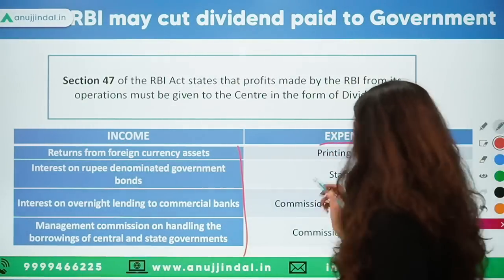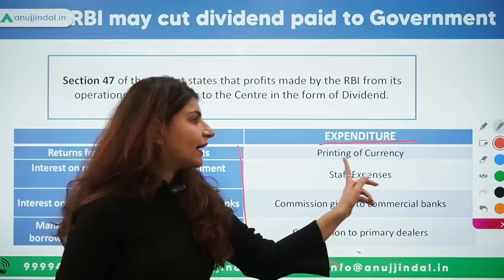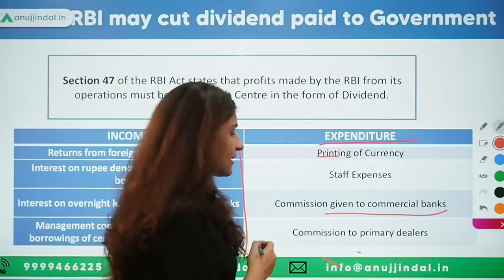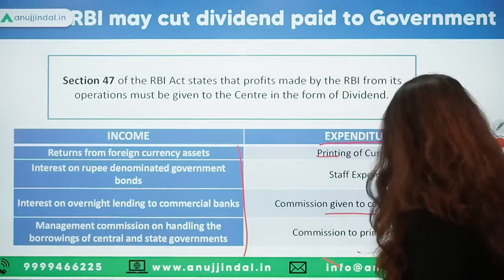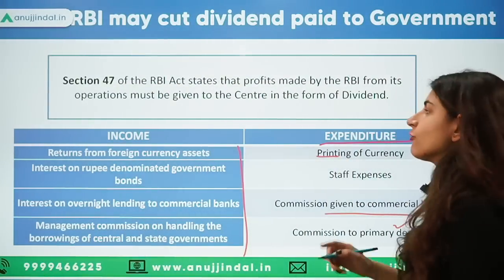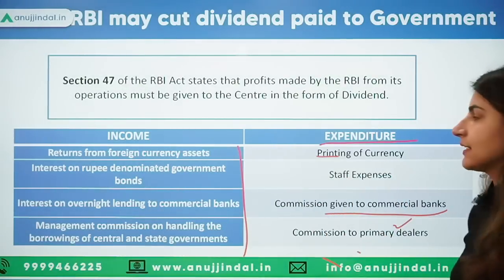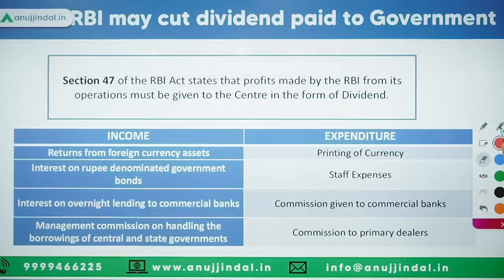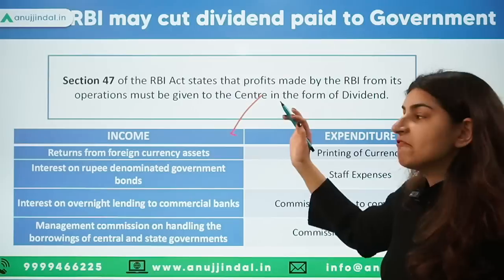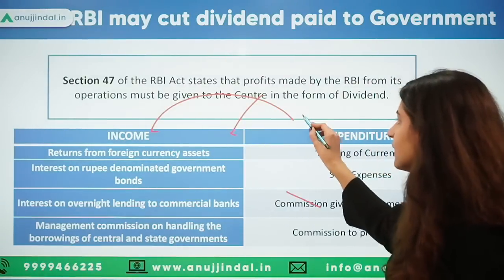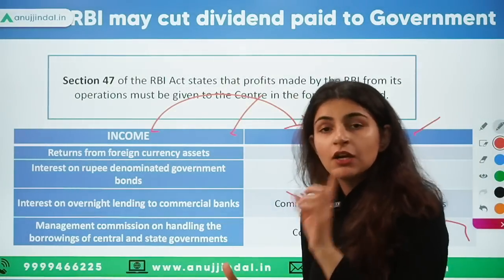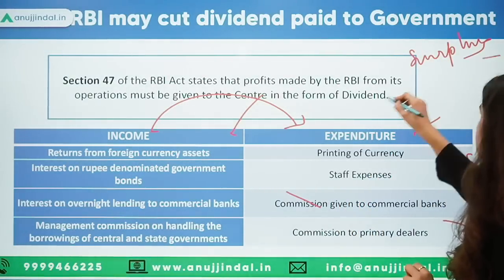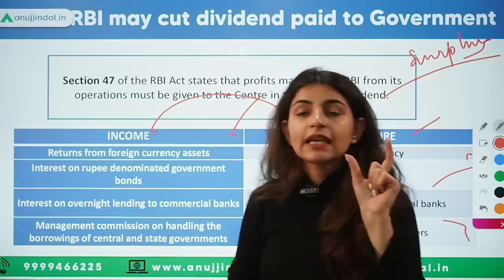Talking about expenditure: certain expenditures of RBI include printing of currency, staff expenses, and commission given to commercial banks and primary dealers who work on behalf of RBI for selling and purchasing government securities. Primary dealers earn a commission from RBI. When we take the difference of income and expenditure, we get profit — which in RBI's case is called surplus.